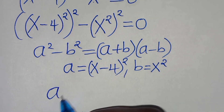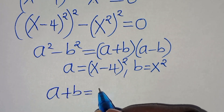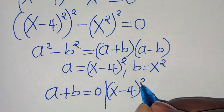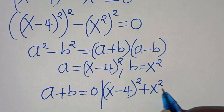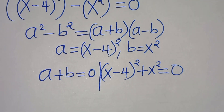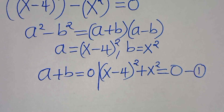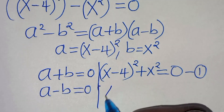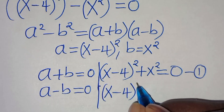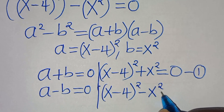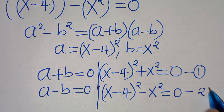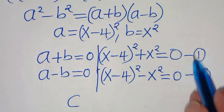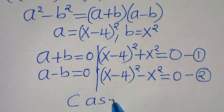So now we have: a plus b equals 0, which is (x minus 4) squared plus x squared equals 0 — call this equation 1. And a subtract b equals 0, which is (x minus 4) squared subtract x squared equals 0 — call this equation 2. This gives us two cases.